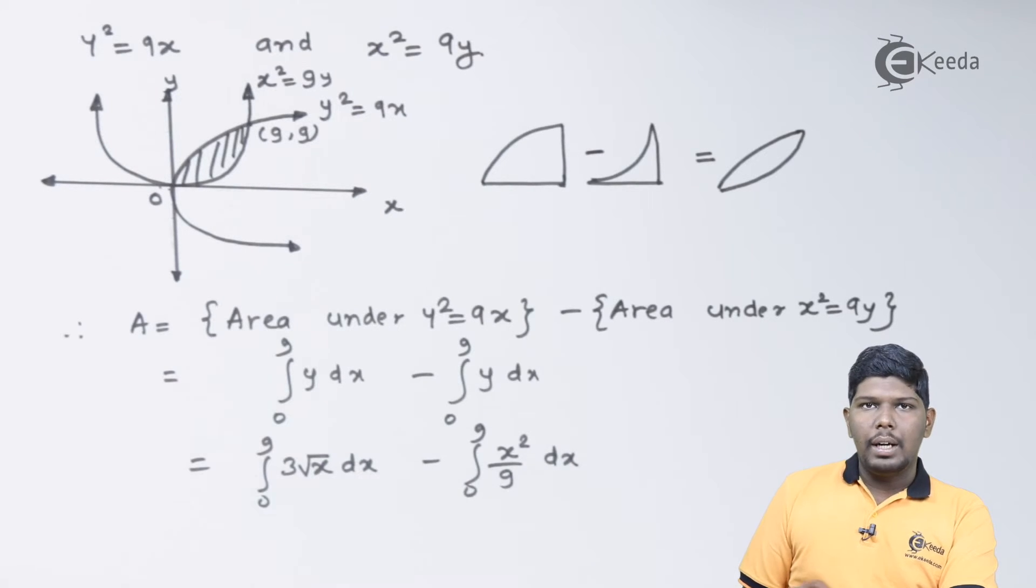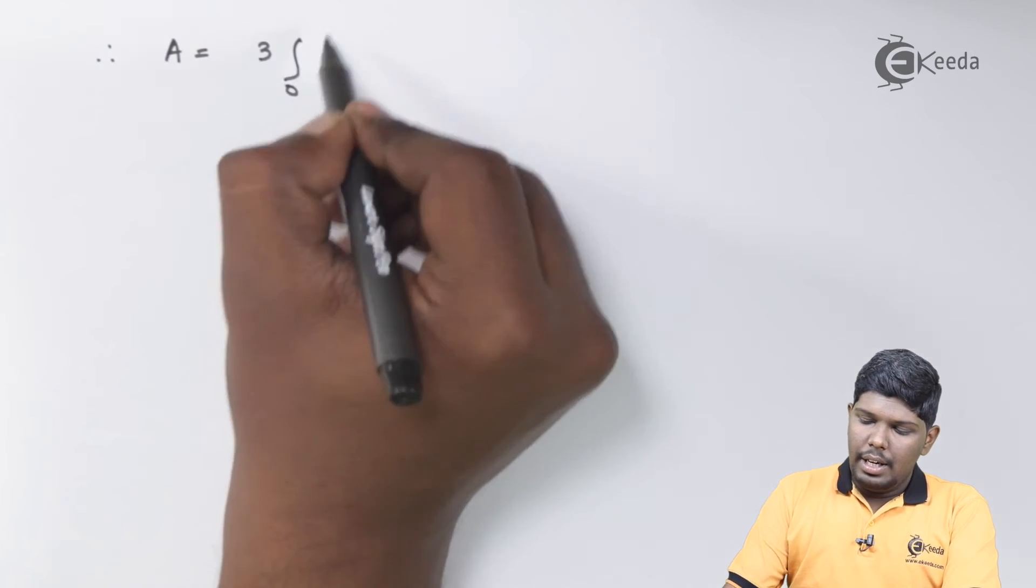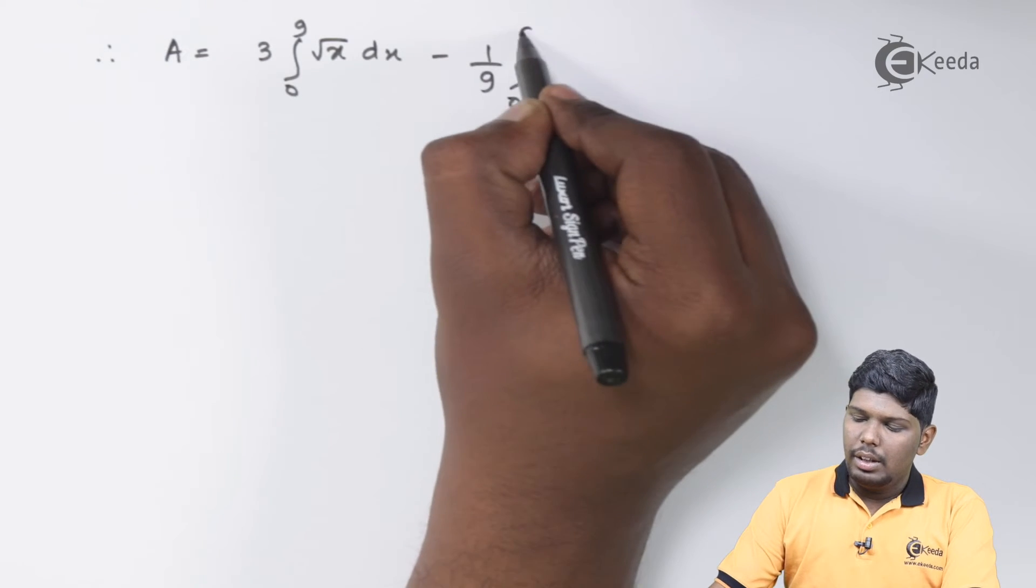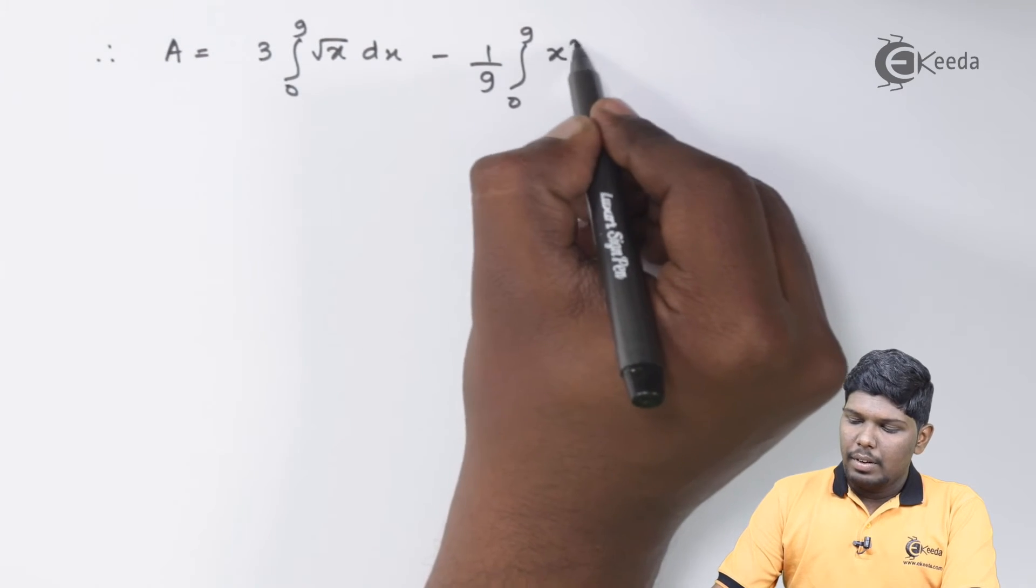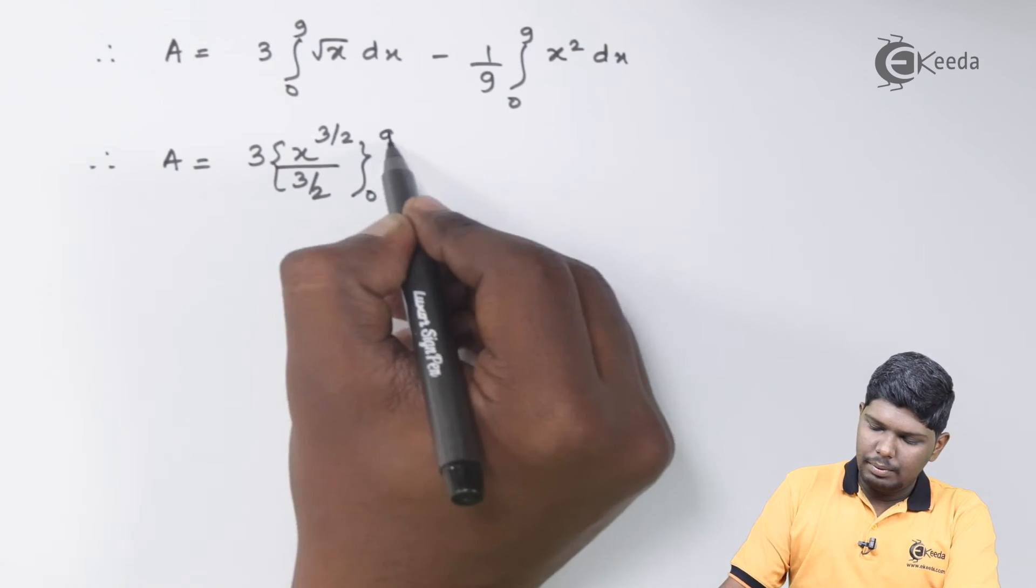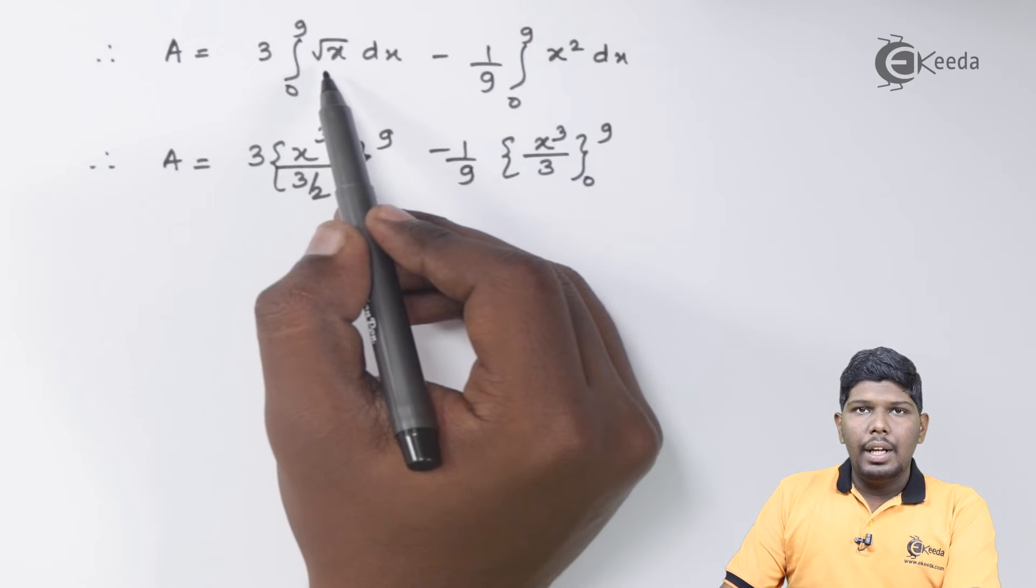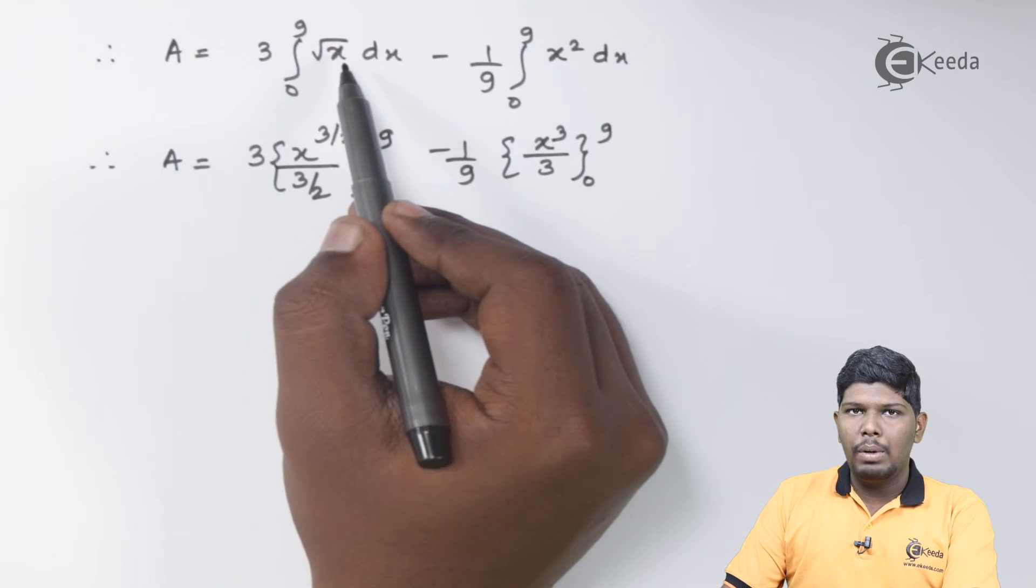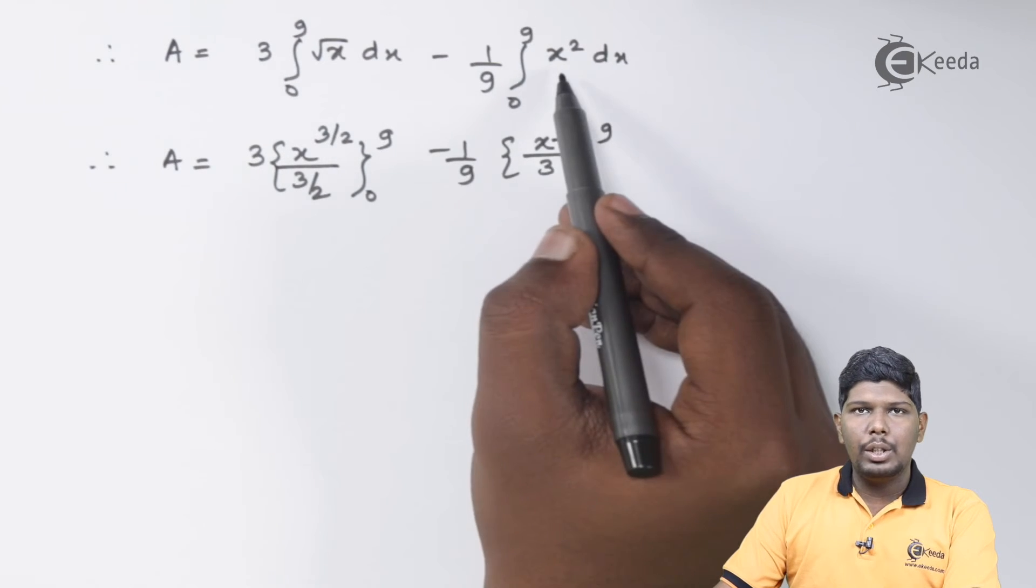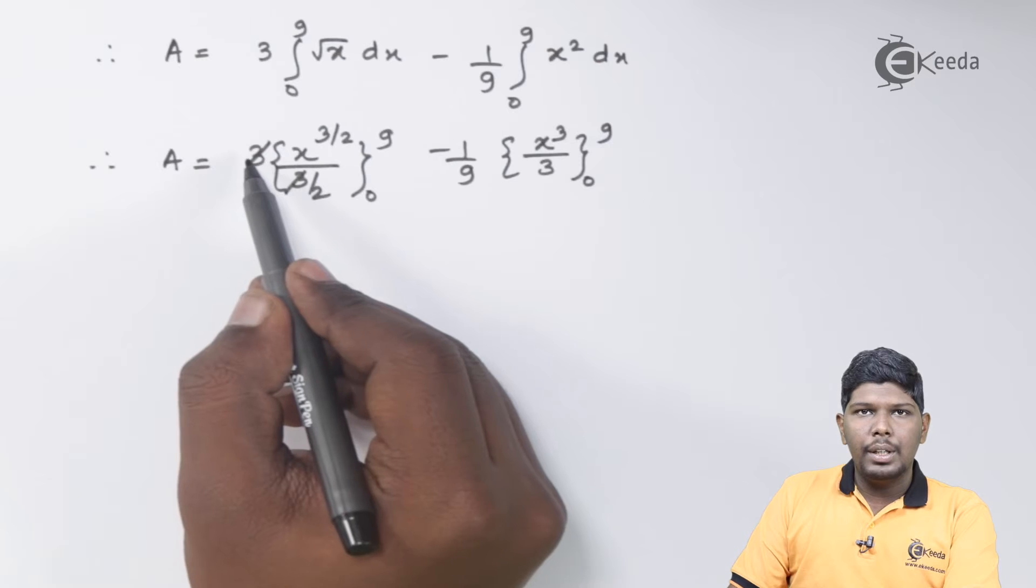Now let us integrate these two parts. Therefore we have A is equal to 3 integral 0 to 9 root x dx minus 1 upon 9 integral 0 to 9 x square dx. This will give you 3 integration of root x, considering it as x raise to half, its formula will be x raise to half plus 1, that is x raise to 3 by 2 upon 3 by 2, minus 1 by 9 integration of x square is x cube by 3 within limits 0 to 9.